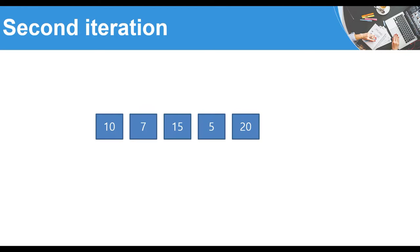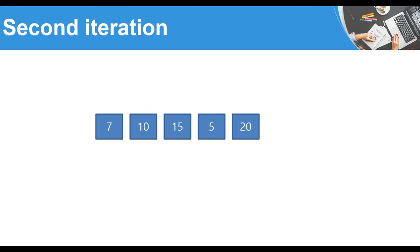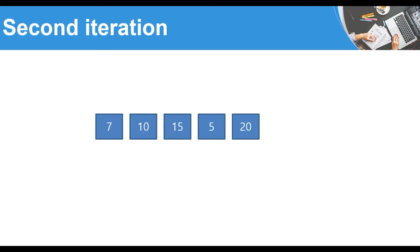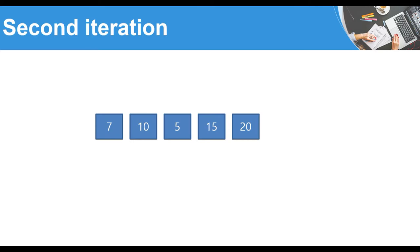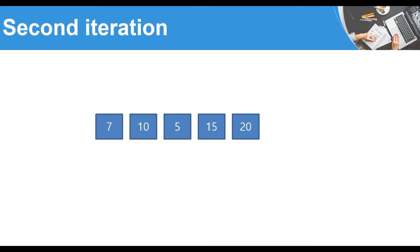In the second iteration we do the same process. Is 10 greater than 7? Yes, so we swap them — 10 moves to second place. Is 10 greater than 15? No, so we leave it. Is 15 greater than 5? Yes, so we swap them. Is 15 greater than 20? No, so we leave it. We start the third iteration with: 7, 10, 5, 15, 20. We can see that the last two elements are already sorted.